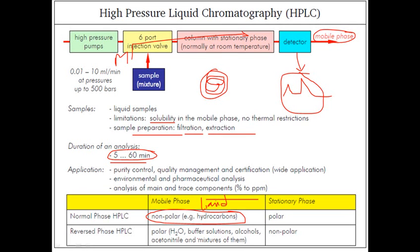In reverse-phase HPLC, the mobile phase is polar and the stationary phase is non-polar. We use this reverse configuration because if we use hydrophobic materials in both phases, they interact with each other and separation cannot be established. We need different types of chemical properties for the molecules in the two phases.